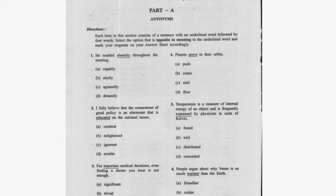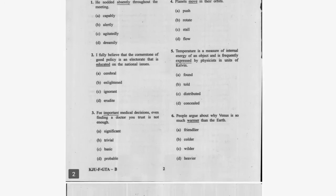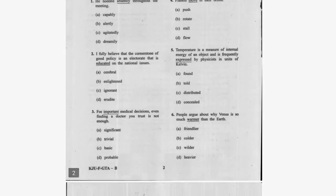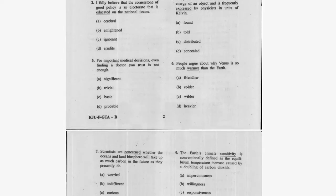Question one: 'He noted absently throughout the meeting.' The antonym of 'absently' is alertly. Question two: 'I fully believe the cornerstone of good policy is an electorate that is educated on the national issues.' The antonym of 'educated' is ignorant. Option C is correct.